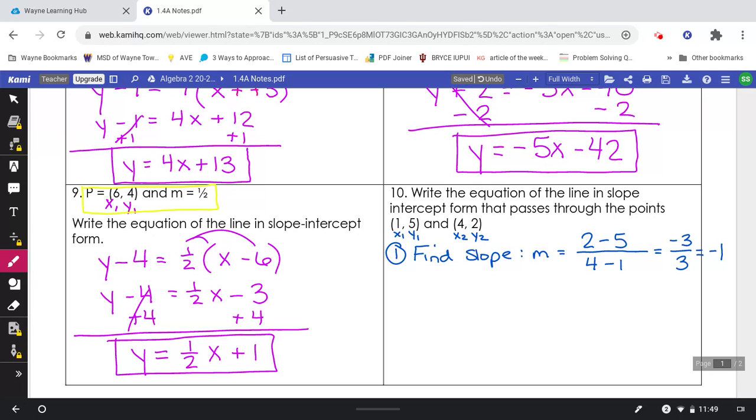The problem, though, doesn't just ask for the slope. It actually asks for the equation. So we're only part 1 done of 2. Your second step is to take that slope, m, and take our x1 and our y1 and plug it back into point slope form, the same thing we were working on on problem 9.